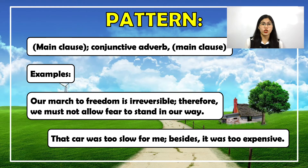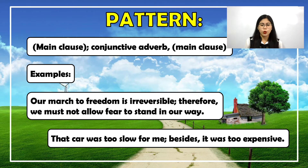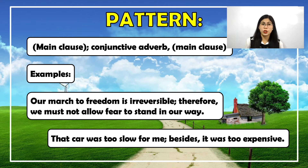Take note that after the comma following the conjunctive adverb, the first letter of the next word should be written in lowercase. Here the second clause modifies or describes the first clause like an adverb — if you are asked why we must not allow fear to stand in our way, it is because our march to freedom is irreversible. Another example: 'That car was too slow for me; besides, it was too expensive.'